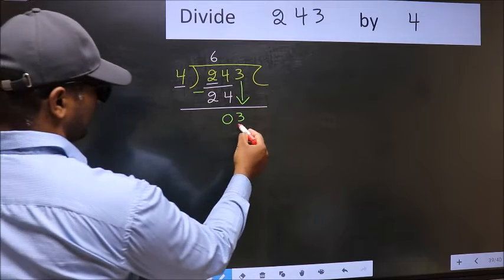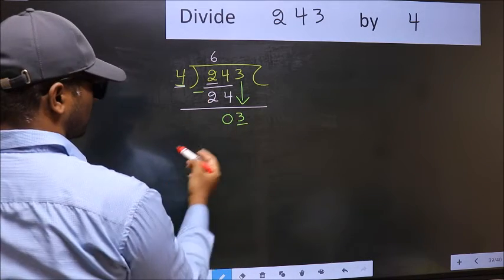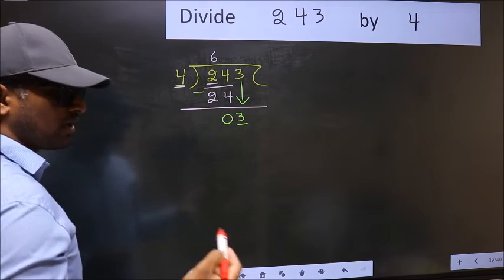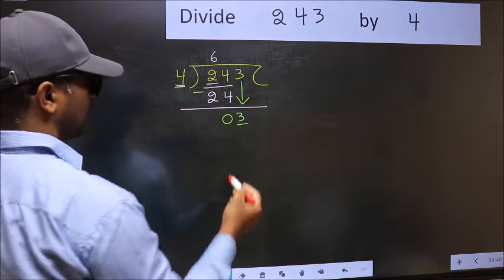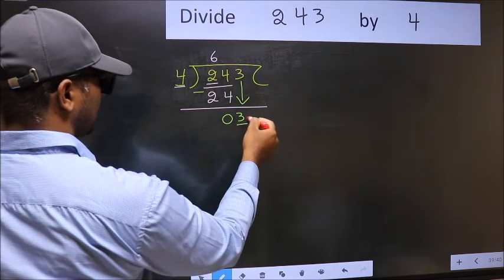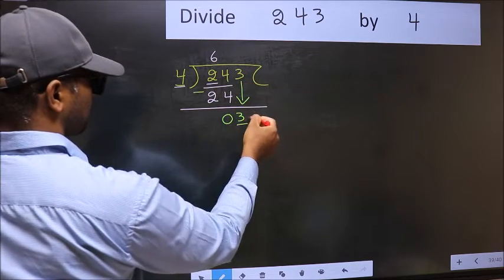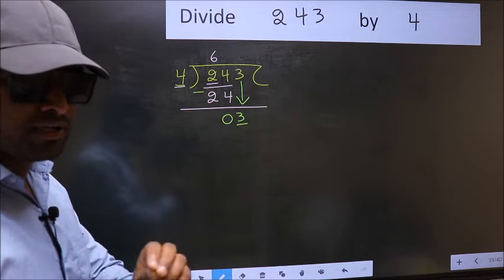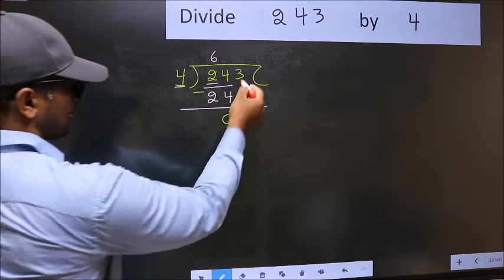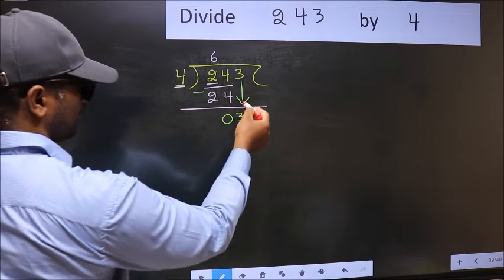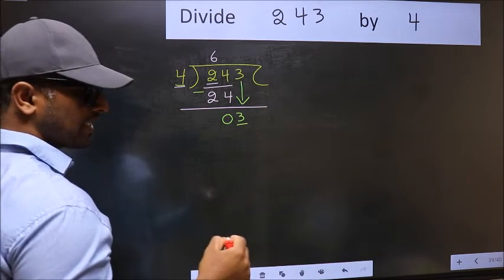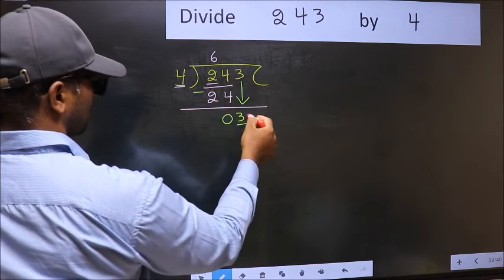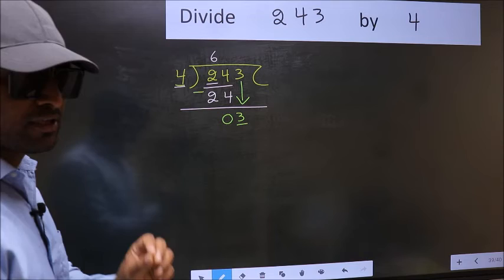And the mistake is this. Here we have 3 and here 4. 3 is smaller than 4. So what they do is they directly put a dot and take 0, which is wrong. Why is it wrong? Because just now you brought this number down, and in the same step you want to put a dot and take 0.